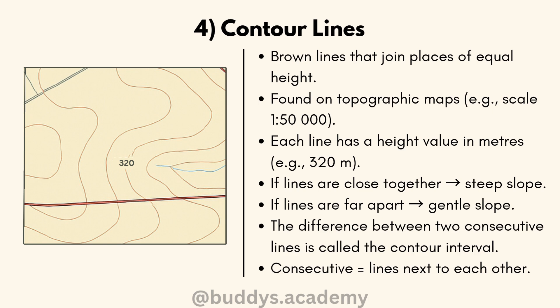On this specific contour line, the height is 320 meters. The difference between two consecutive contours is known as the contour interval. Consecutive contours are the ones directly next to each other.